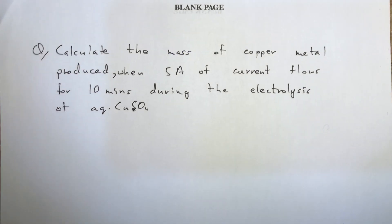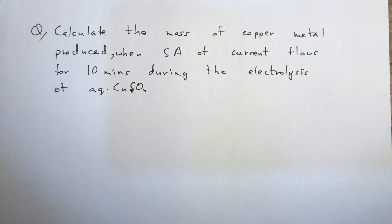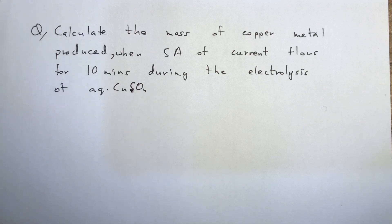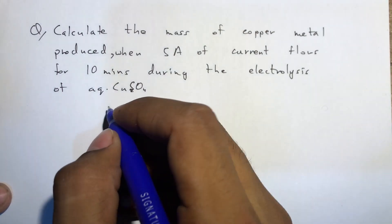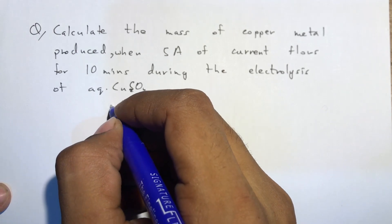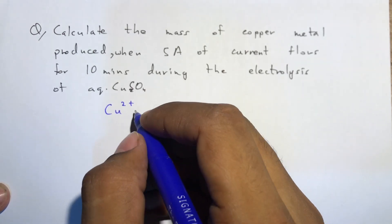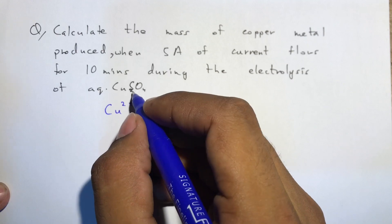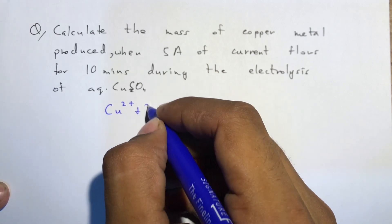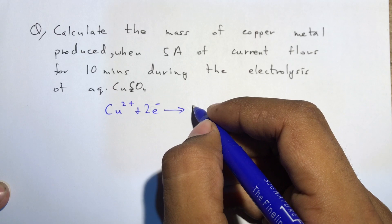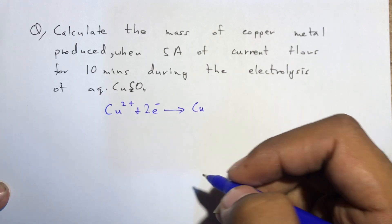Question: calculate the mass of copper metal produced when 5 amperes of current flows for 10 minutes during the electrolysis of aqueous copper sulfate. Copper metal is produced at the cathode, so we write the cathodic equation: Cu²⁺ + 2e⁻ → Cu.